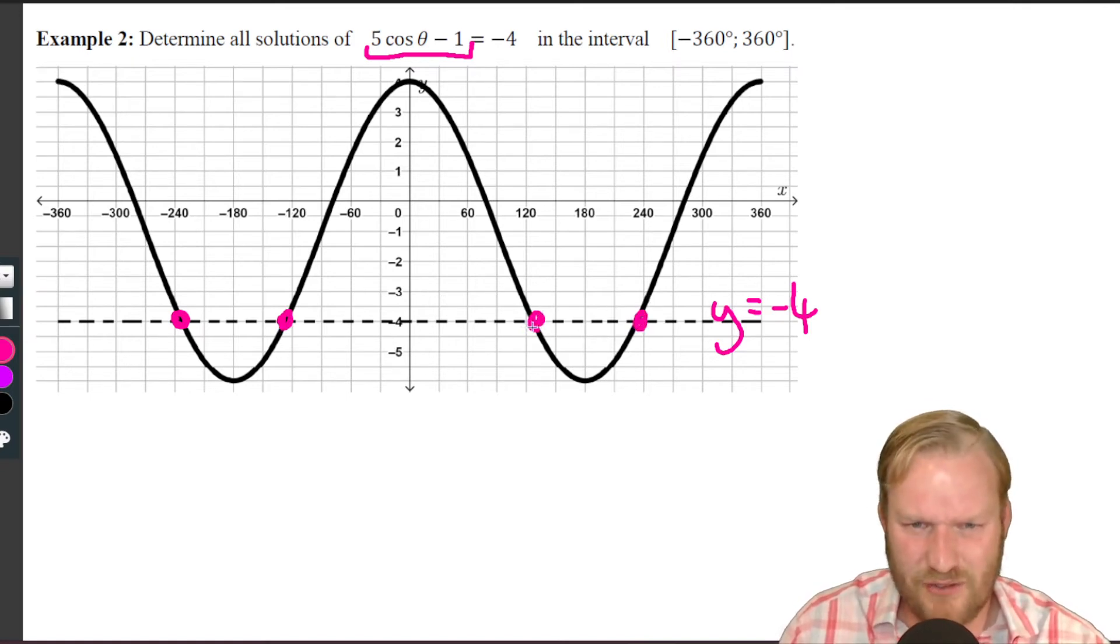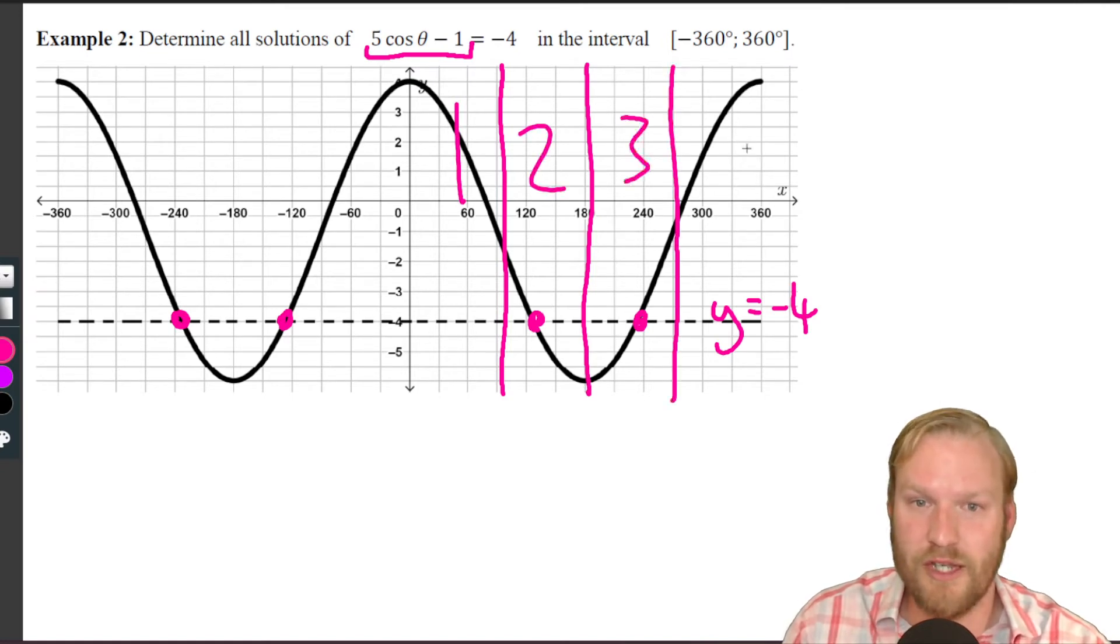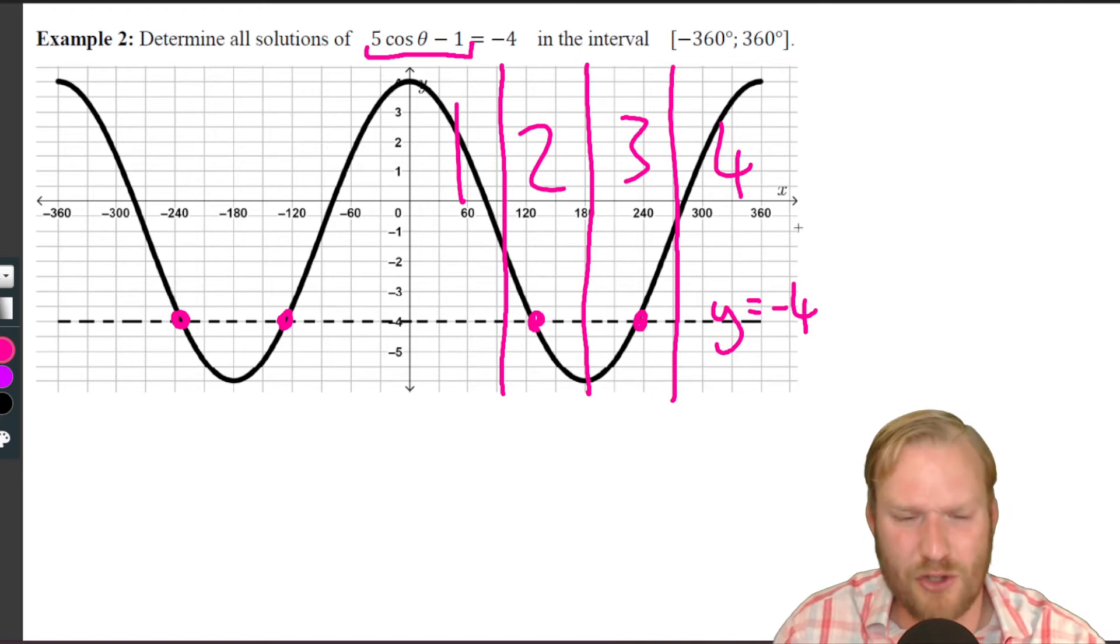We can see from the graph that there are four solutions. We're expecting to get them just after 120, 240 somewhere. We've got a sense of where they are. We could even think what quadrants they're in because quadrant one is up to 180, so this is quadrant one, quadrant two, quadrant three, and quadrant four.